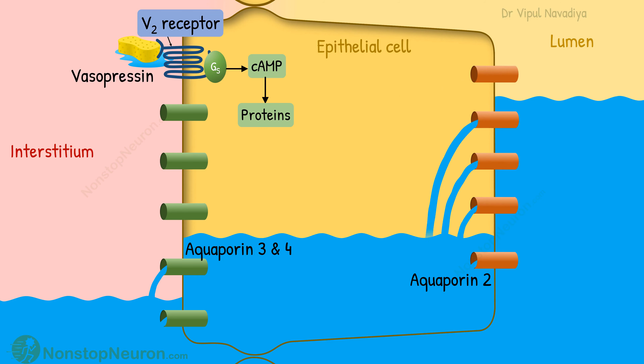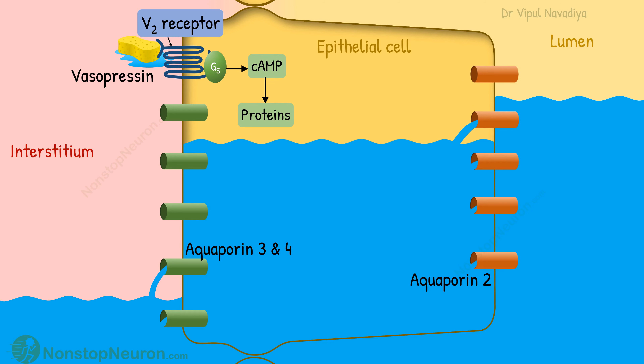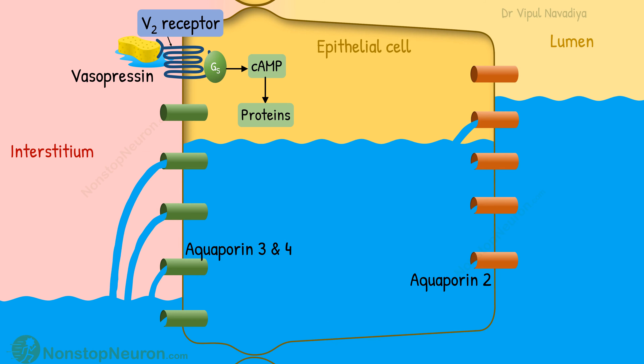This increases water transport at the apical membrane, so more water enters the cell. The cell already has abundant aquaporins on the basolateral membrane, so increased water entry at the apical membrane automatically results in increased water exit at the basolateral membrane. Thus, water reabsorption is increased.